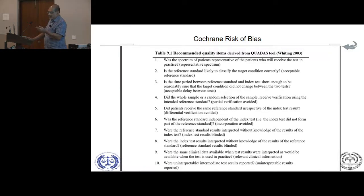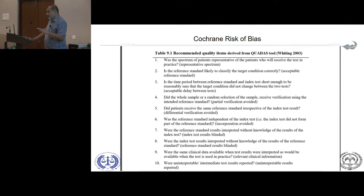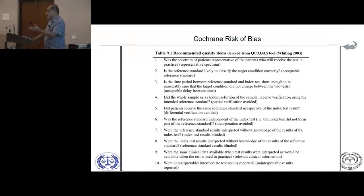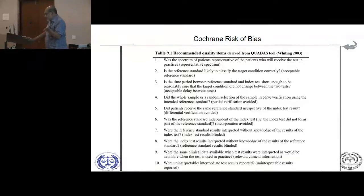Of all the studies they look at, reviewers will first see if it fulfills their criteria, then read the study properly and fill in a table of all the characteristics, by which time they will have learned enough to make an appraisal of how well it was done. The questions they ask include: was the spectrum of patients representative of the patients who would receive the test in practice? This is looking at spectrum bias.